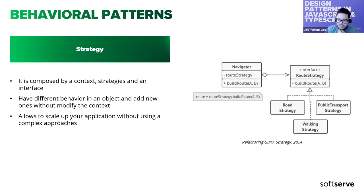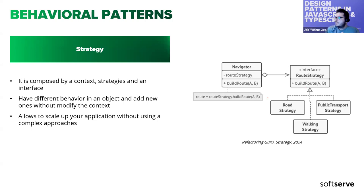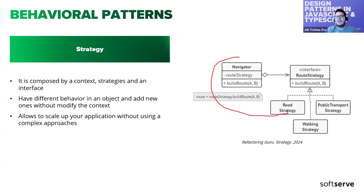The Strategy pattern gives us the ability to scale our application in different ways. If we want to authenticate users with a new provider like Apple, we just identify the provider as the argument and use the same method — the strategy handles the rest. In the code example, we have an interface that needs to be implemented by our classes and a Navigator class that builds routes, with strategies for by road, by public transport, and walking. Google Maps is the real-world analogy.